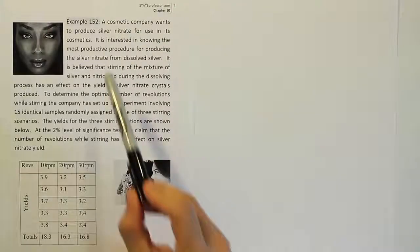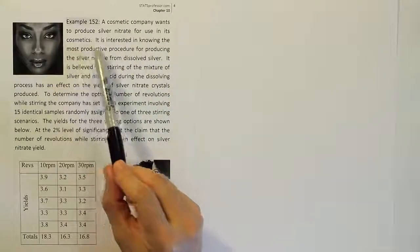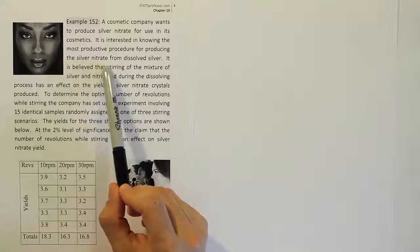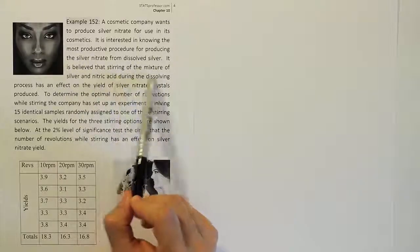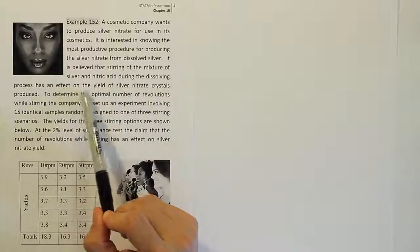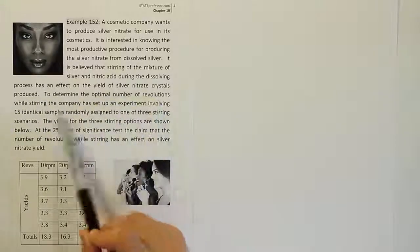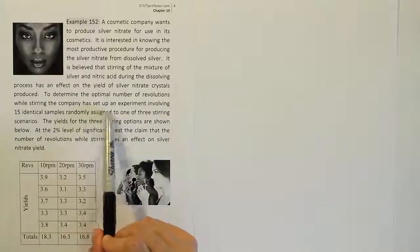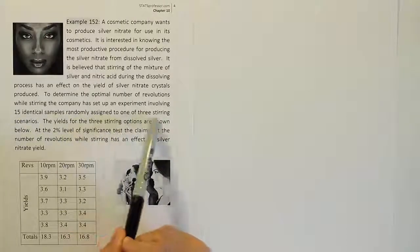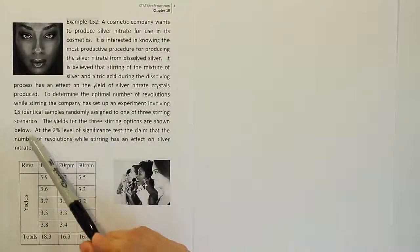Example 152. A cosmetic company wants to produce silver nitrate for use in its cosmetics and is interested in knowing the most productive procedure for producing the silver nitrate from dissolved silver. It is believed that stirring of the mixture of silver and nitric acid during the dissolving process has an effect on the yield of silver nitrate crystals produced. To determine the optimal number of revolutions while stirring, the company has set up an experiment involving 15 identical samples randomly assigned to one of three stirring scenarios. The yields for the three stirring options are shown below.